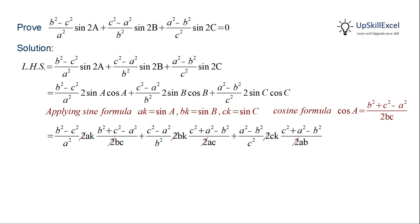Also observe that in the first term we have a in the numerator and a square in the denominator, so we can cancel out one a from the denominator. Similarly we can cancel out b and c in the second and third term.